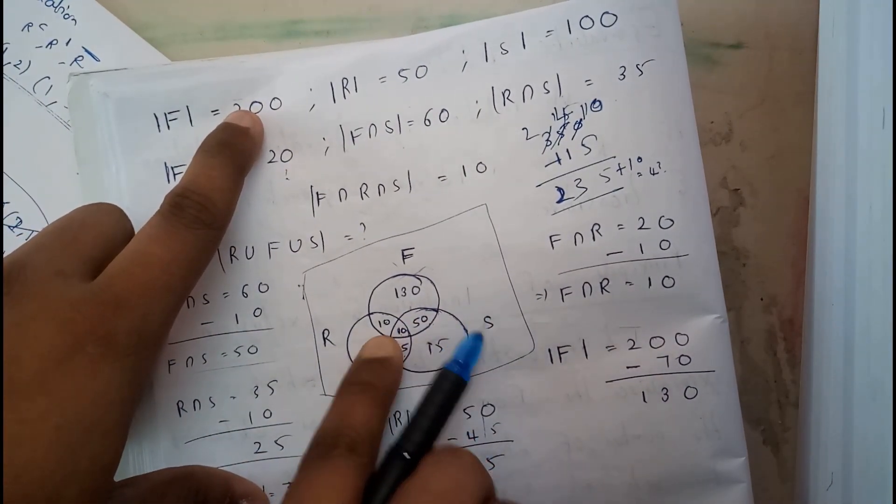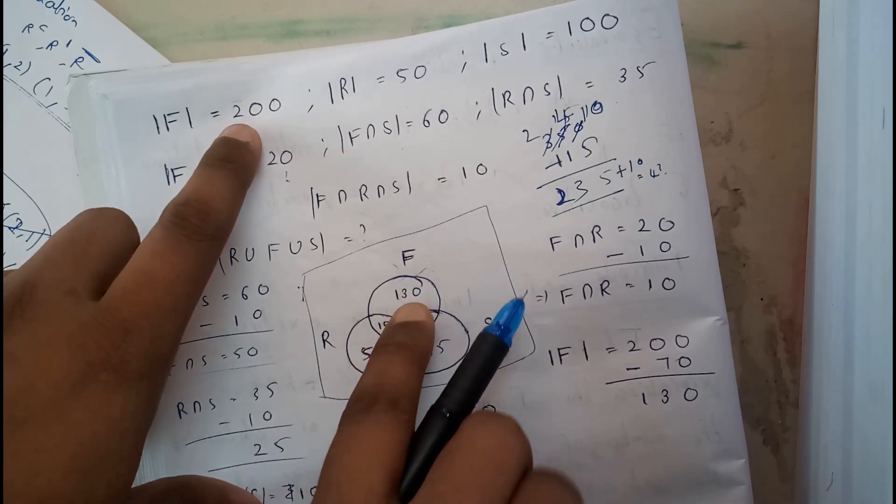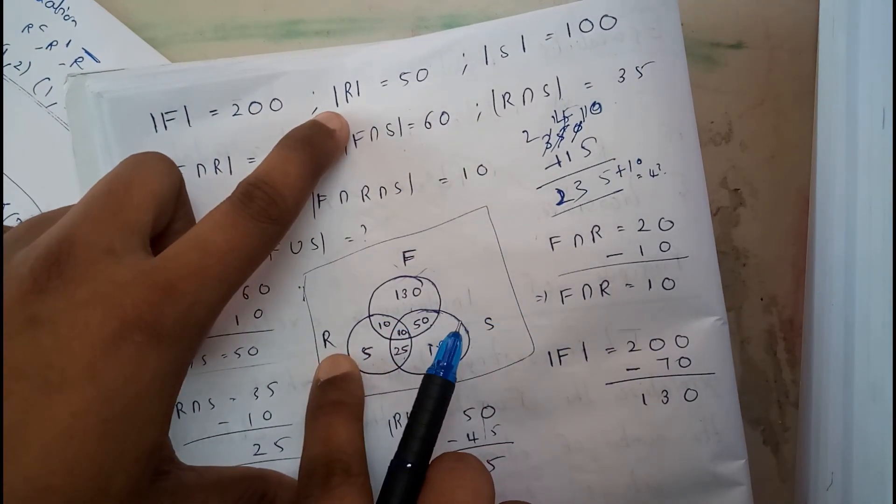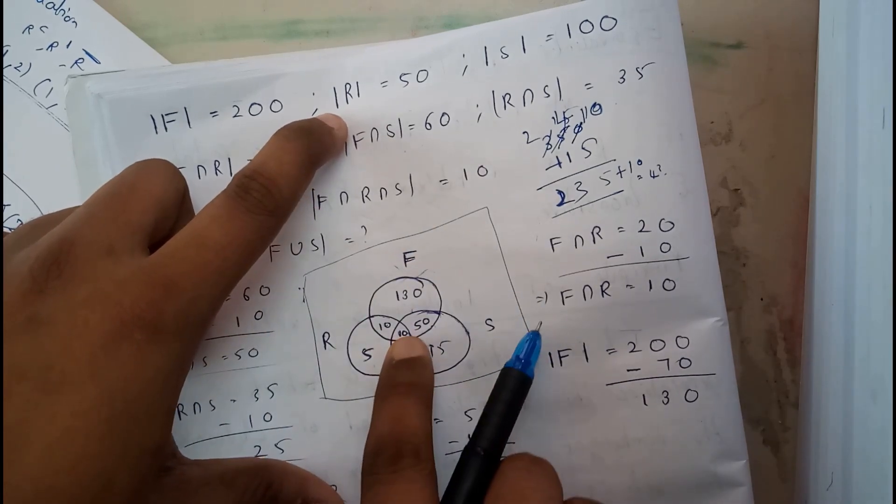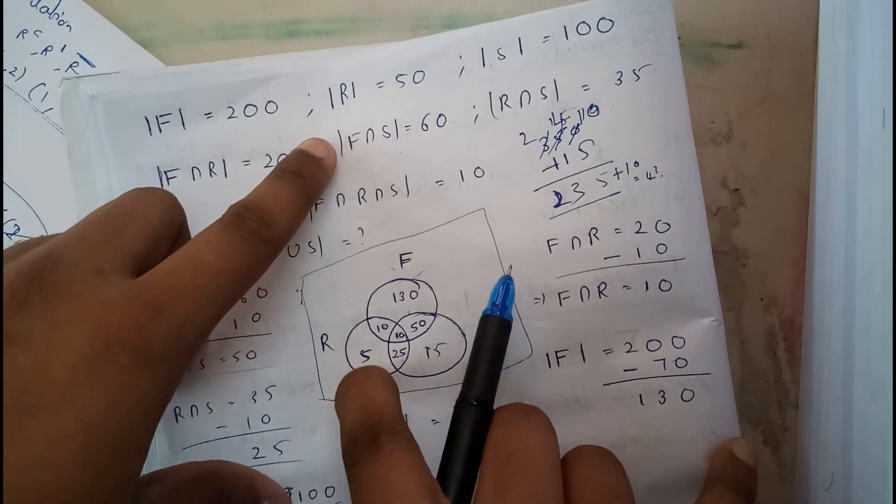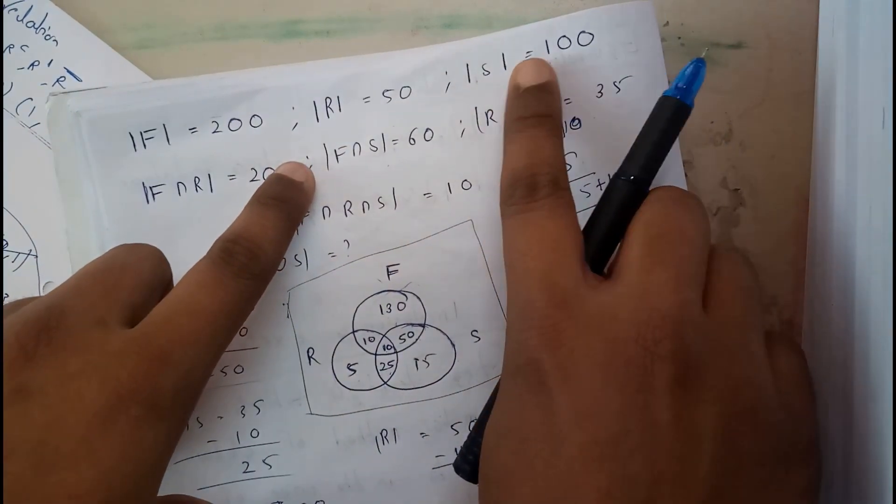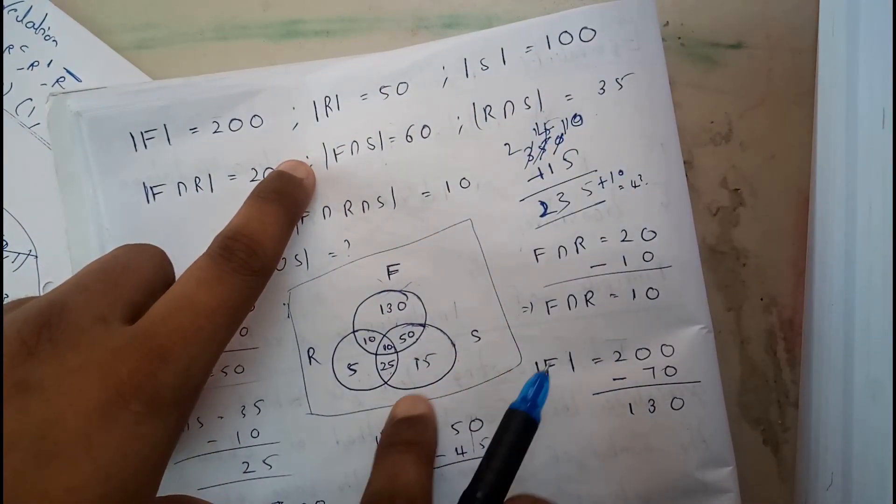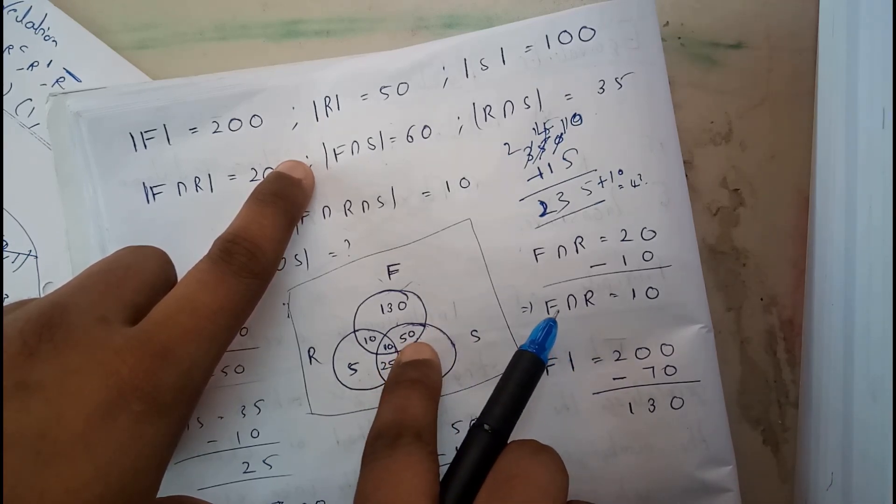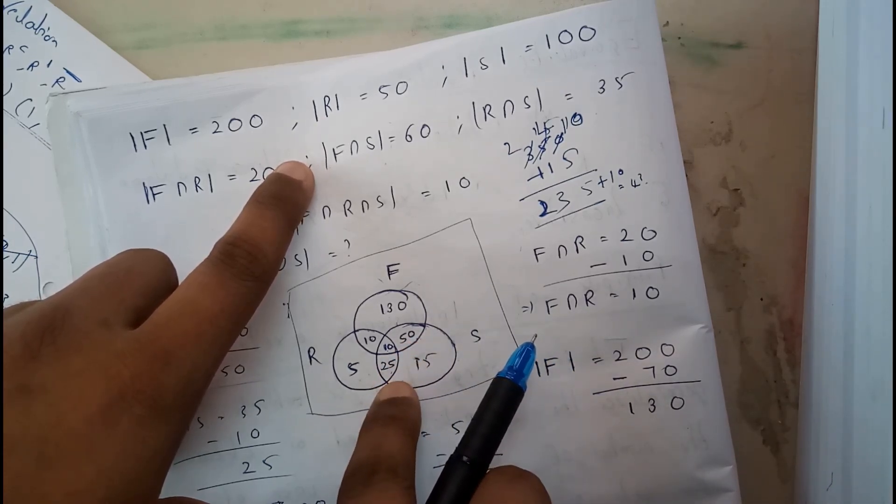R: he gave 50, but 25, 10, 10, which is 45, already occupied, so 5 is left. We'll write 5 here. Next, S equals 100, so already occupied 50, 10, 25, the left out is 15.